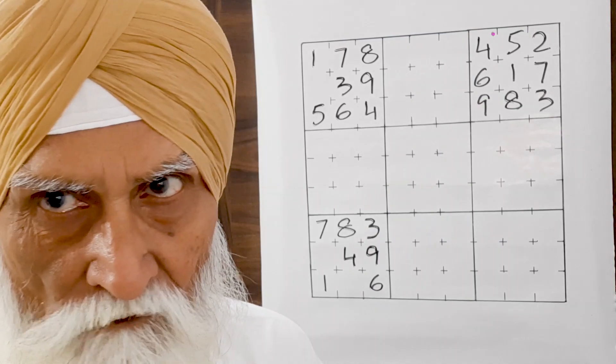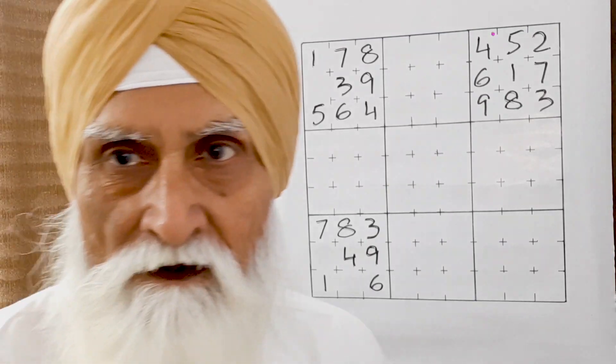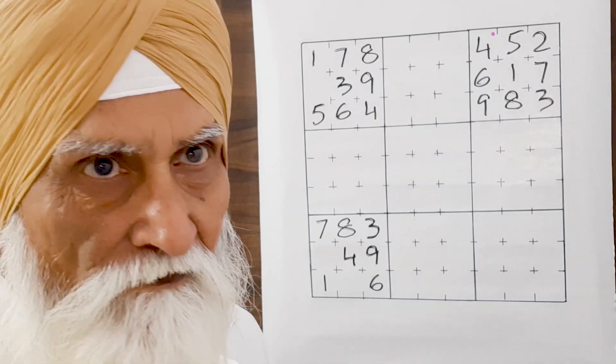That means on one A4 size sheet, you will get eight Sudoku grids, which you can use to write and give to your children.